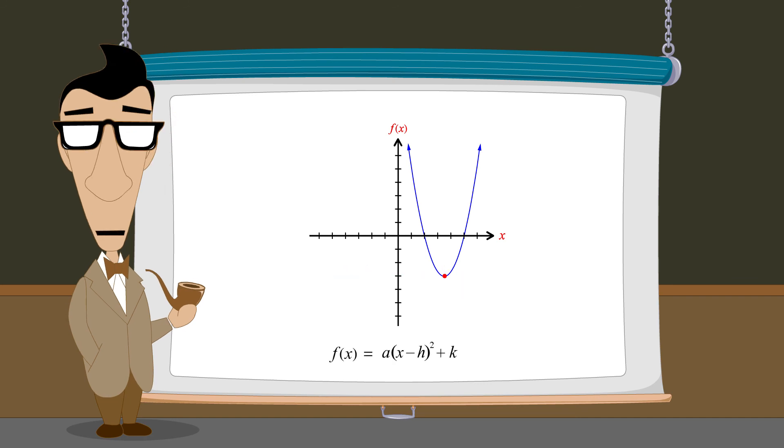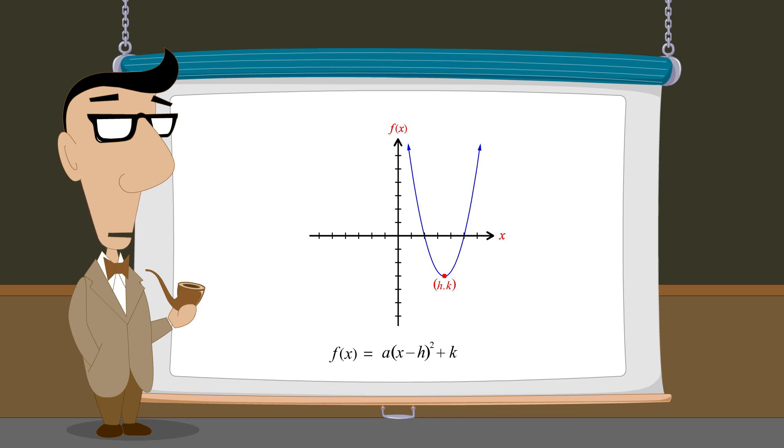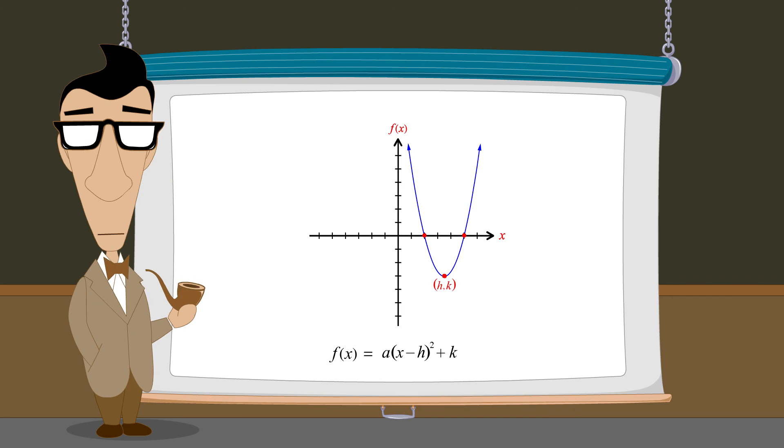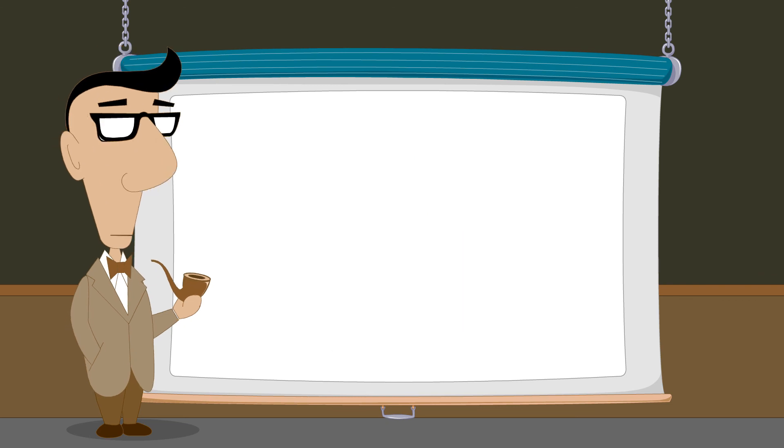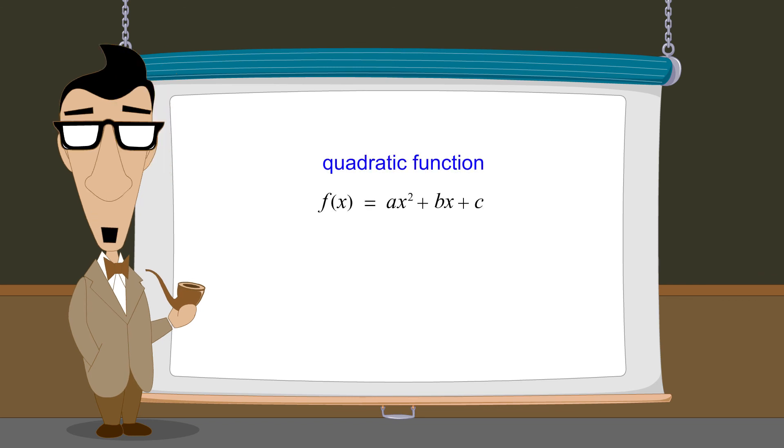Although it is much easier to sketch the graph of a quadratic function written in vertex form, knowing where the function intersects the x-axis can also be useful when sketching its graph. But to do this, we must first learn how to solve quadratic equations. In the next lecture, we will explore the difference between quadratic functions and quadratic equations.